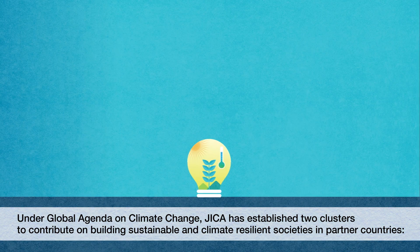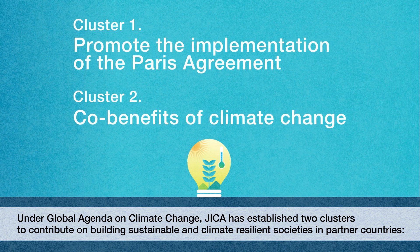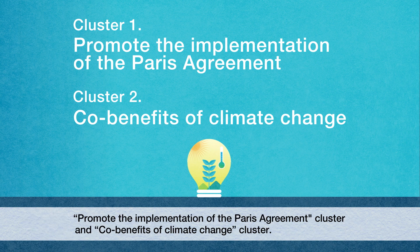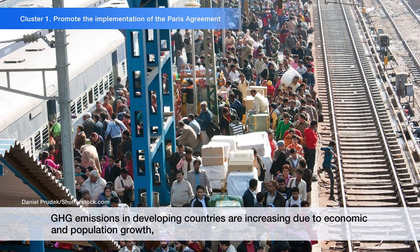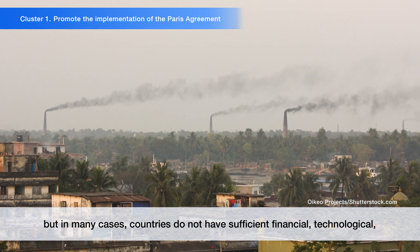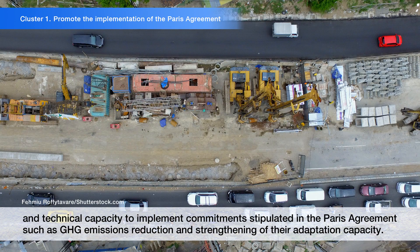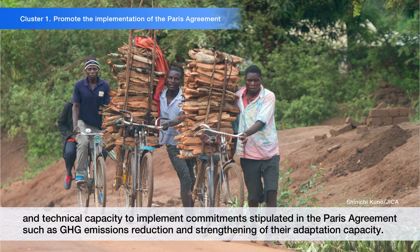Under the Global Agenda on Climate Change, JICA has established two clusters to contribute to building sustainable and climate-resilient societies in partner countries: the Promote the Implementation of the Paris Agreement cluster, and the Co-Benefits of Climate Change cluster. Greenhouse gas emissions in developing countries are increasing due to economic and population growth, but many countries do not have sufficient financial, technological, and technical capacity to implement commitments stipulated in the Paris Agreement, such as greenhouse gas emissions reduction and strengthening of their adaptation capacity.